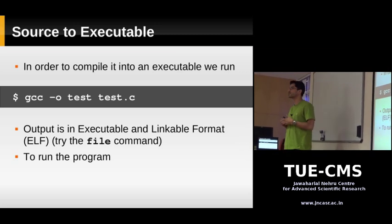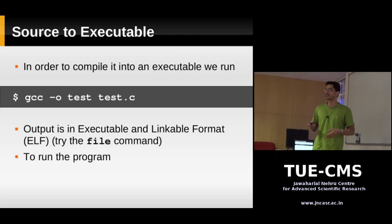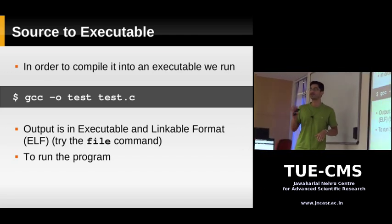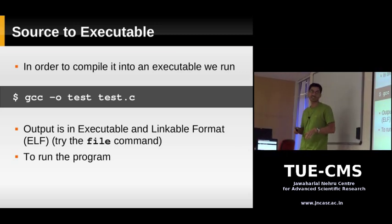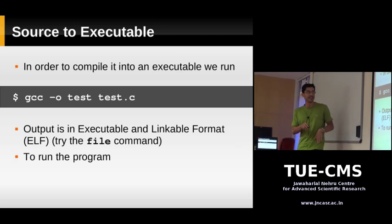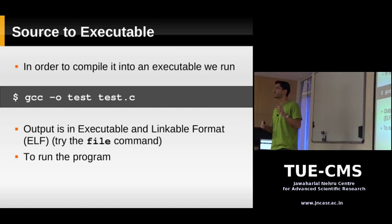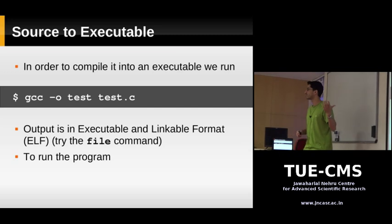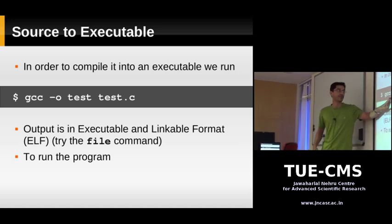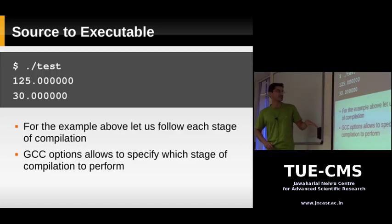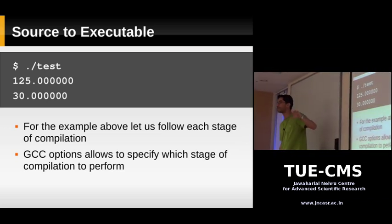If you don't want a file named a.out, you should supply a name with the -o option. When gcc compiles the program and produces an executable file, the executable file is in a format called ELF — the Executable and Linkable Format. This is a standard format you'll find on all Linux systems. If you run the file command on an executable produced by gcc or gfortran, it's going to be the ELF format. Once you've compiled your program, in order to run it from your current working directory, you just write ./test.